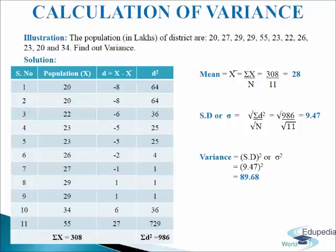So 20 minus 28 gives minus 8; again 20 minus 28 gives minus 8; 22 minus 28 gives minus 6; 23 minus 28 gives minus 5; 23 minus 28 gives minus 5; 26 minus 28 gives minus 2; 27 minus 28 gives minus 1; 29 minus 28 gives 1; 29 minus 28 gives 1; 34 minus 28 gives 6; and 55 minus 28 gives 27.